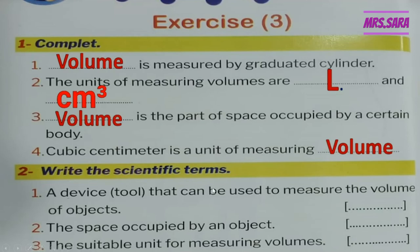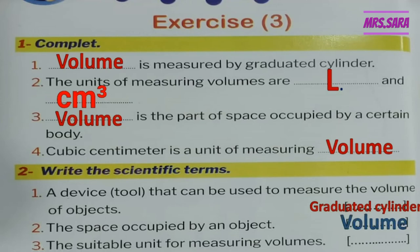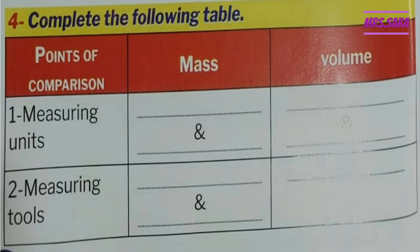Now, write the scientific term. Number one: A device or tool used to measure the volume of an object — the magic words are 'tool' and 'volume,' so the answer is graduated cylinder. Number two: The space occupied by an object — the magic word is 'space,' so the answer is volume. Number three: The suitable unit for measuring volume — the measuring units of volume are liter and cubic centimeter.